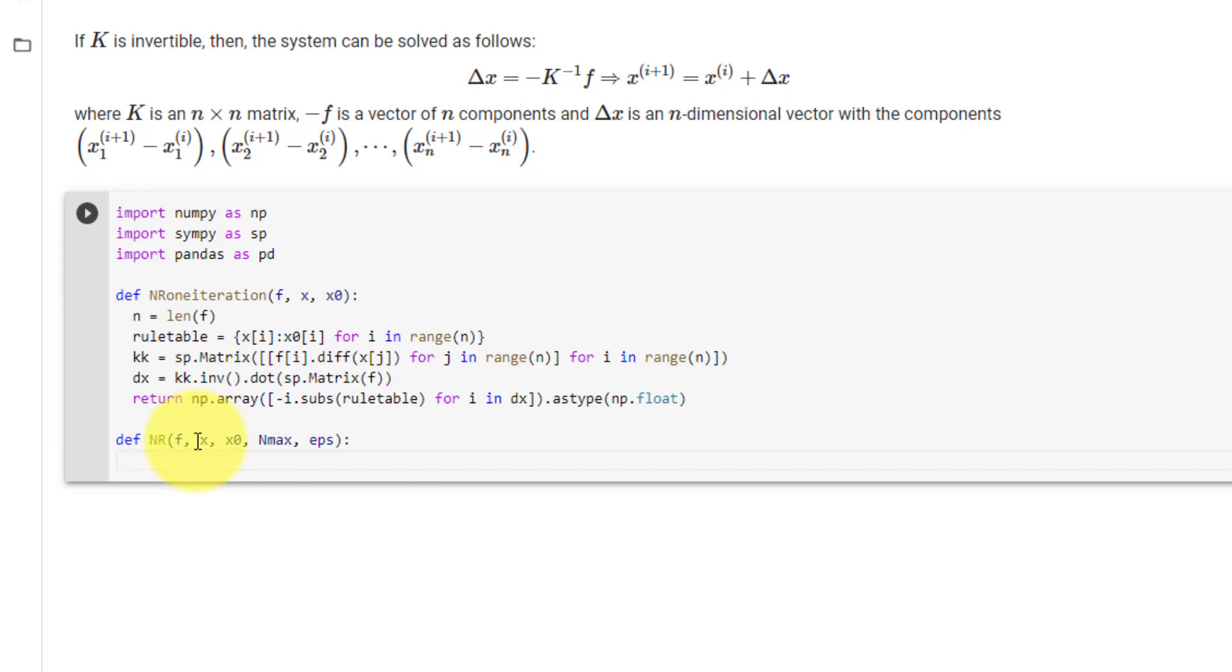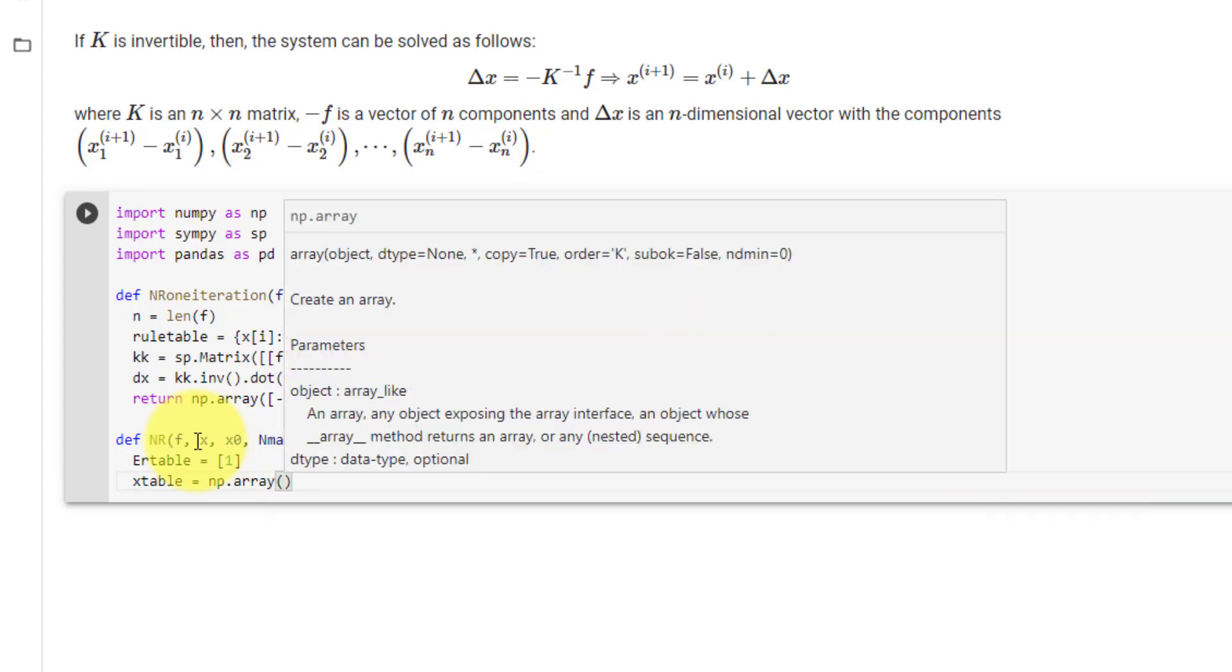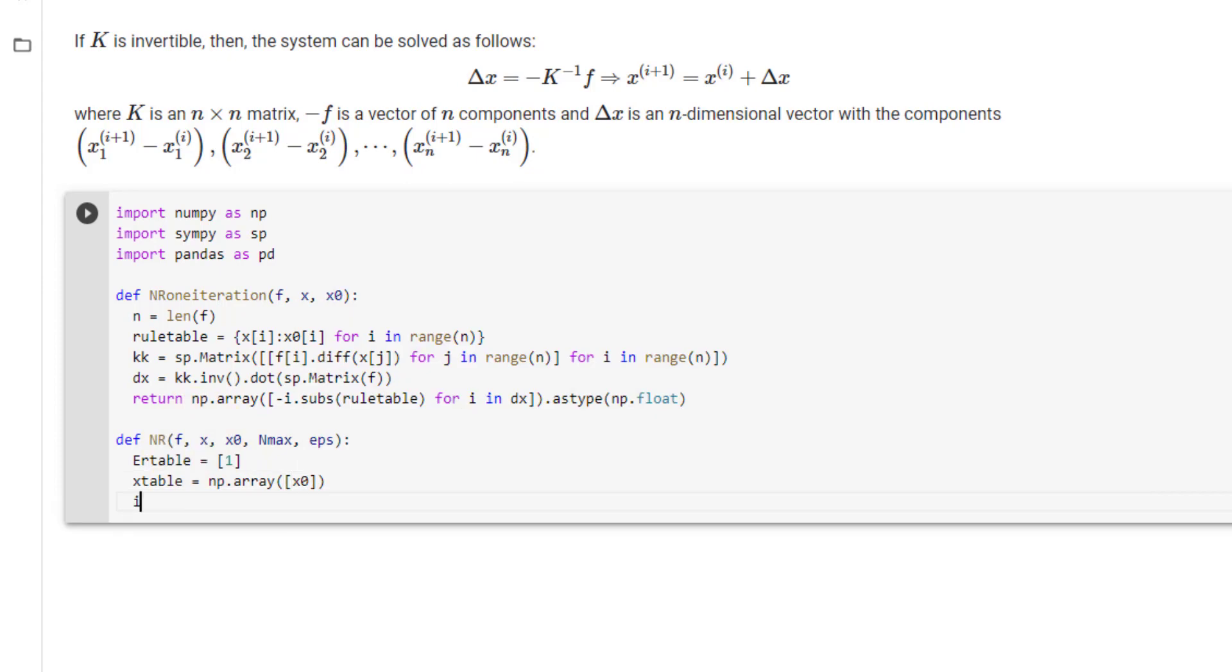First, we will declare our two tables, which is our error table, er table, initialize that 1, and our x table, which must be a numpy array for us to do numpy operations, and then initialize that x naught. And then i will be equal to 0, and here we will declare our while loop, which will keep looping while er table at i is greater than eps, and i is less than or equal to nmax.